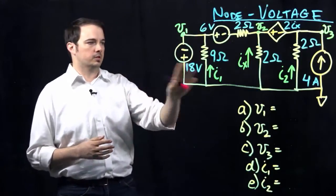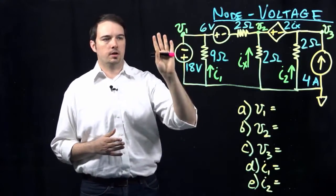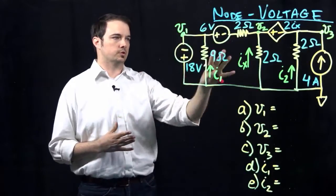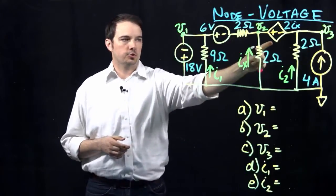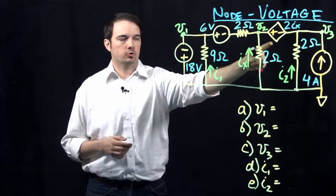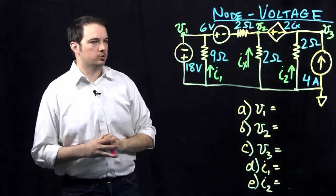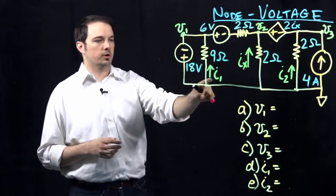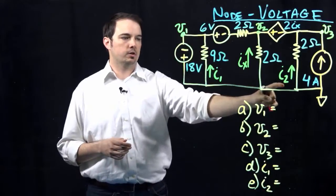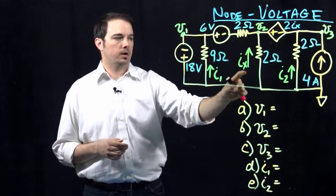We have various different elements in here: current sources, voltage sources, resistors, and a special note is a dependent voltage source indicated right here. So be sure you note that as well as mark these various variables that I've already outlined as far as I1, IX, I2.